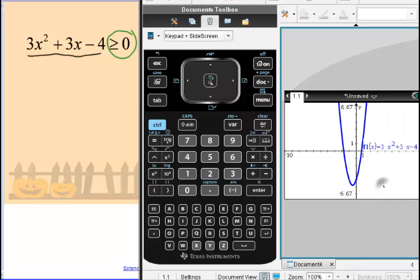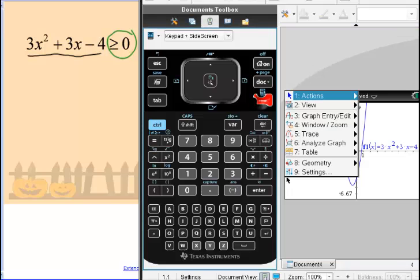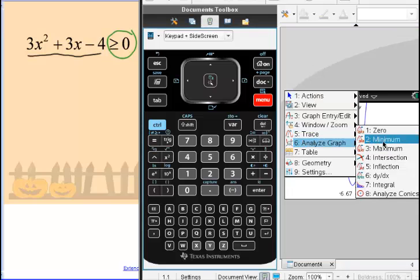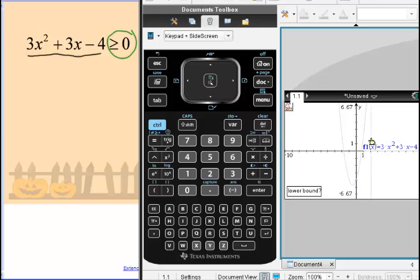Our window is fine. We can see where this graph crosses the x-axis. To find those points, hit the menu key, choose to analyze the graph, and choose to find the zero. That's where you're going across the x-axis.